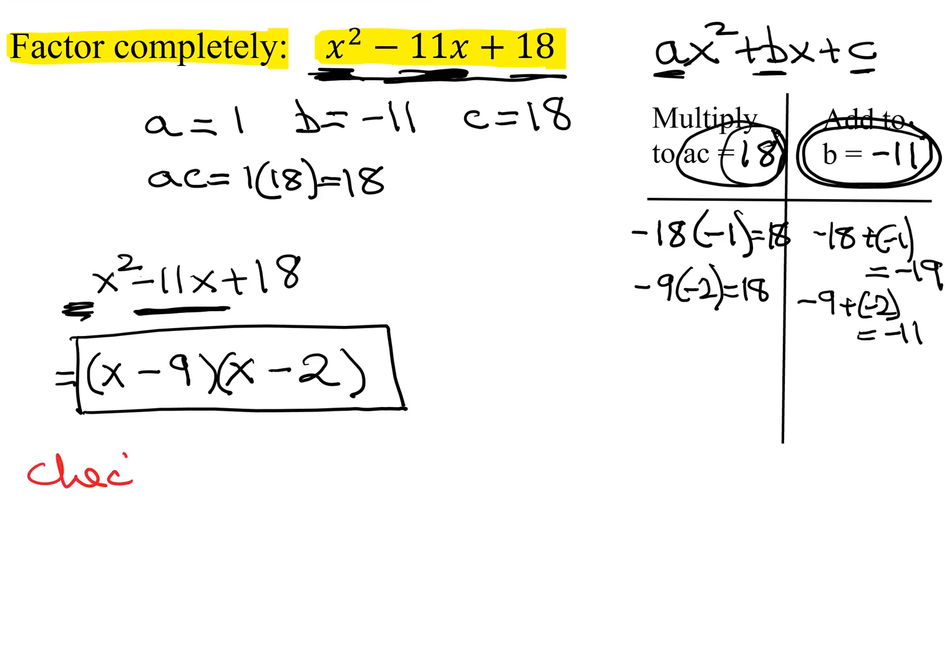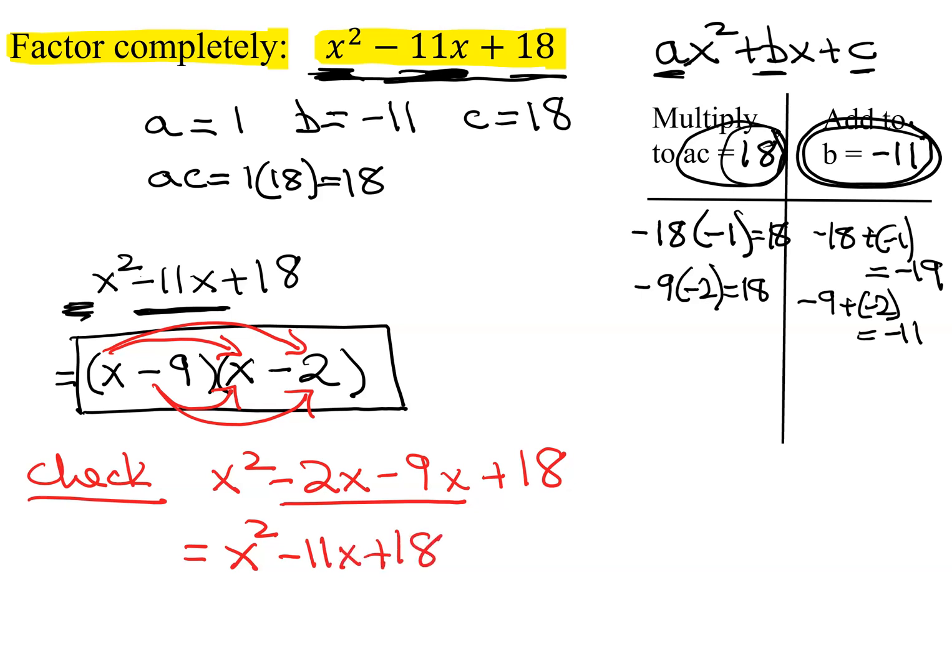How can I check it very quickly? Foil it. The last term, negative 9 times negative 2 is positive 18. Middle two terms, we'll add together x squared. Negative 2 and negative 9 is negative 11x plus 18. Is that the original polynomial I was given to factor? Yes. You now know you have the problem correct.